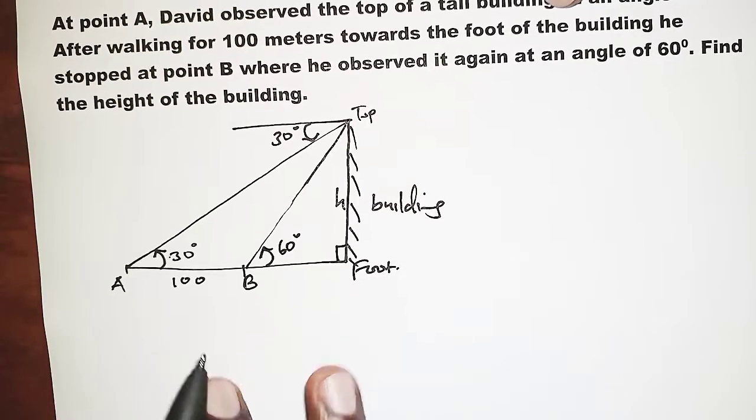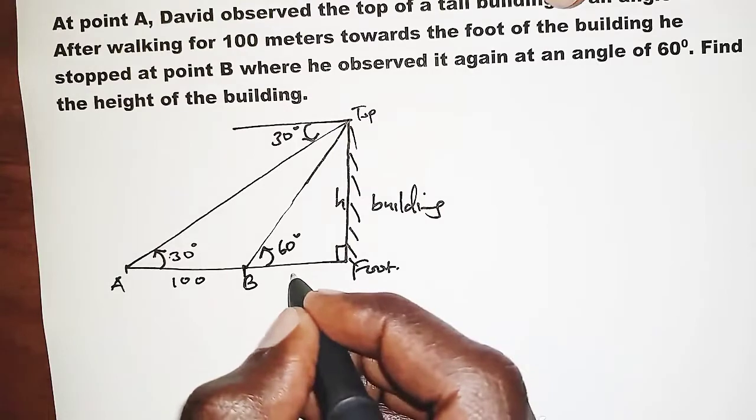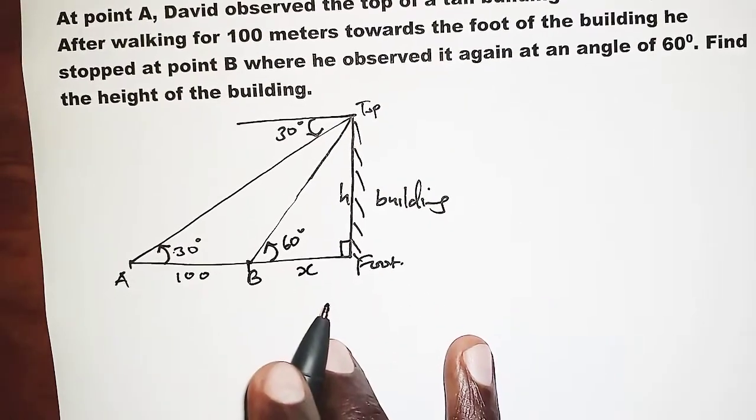So the first thing we will do is let the distance between point B and the foot of the building be X.